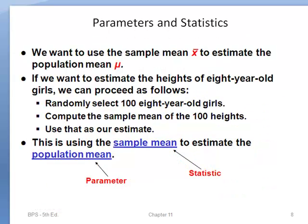Let's look at another example — we want to use the sample mean to estimate the population mean. If we want to estimate the height of 8-year-old girls, we randomly select 100 8-year-old girls, compute the mean of these 100 girls' heights, and use that to estimate our population mean. In both of these examples, we're assuming we took a very good sample representative of our population, so that the sample mean or sample proportion does estimate the population mean or population proportion.